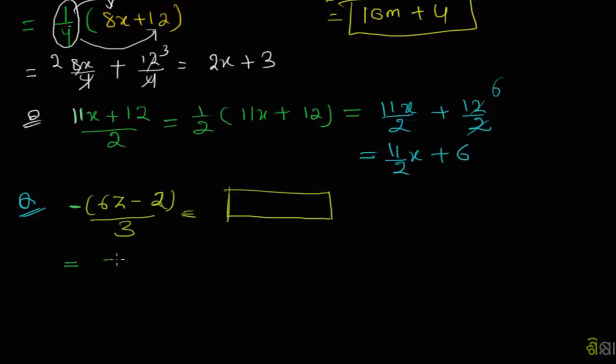Problem 5: Simplify (6z - 2)/3. We divide each term by 3, so 3 is common. We get -1/3 times the expression.